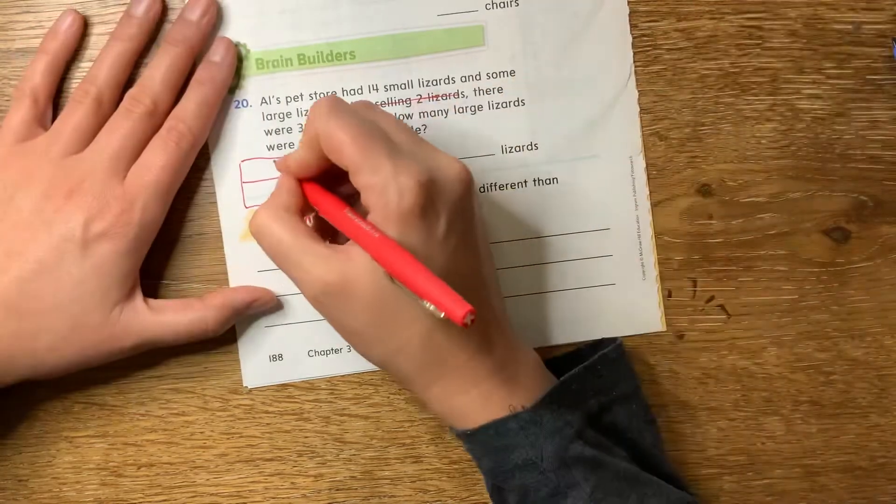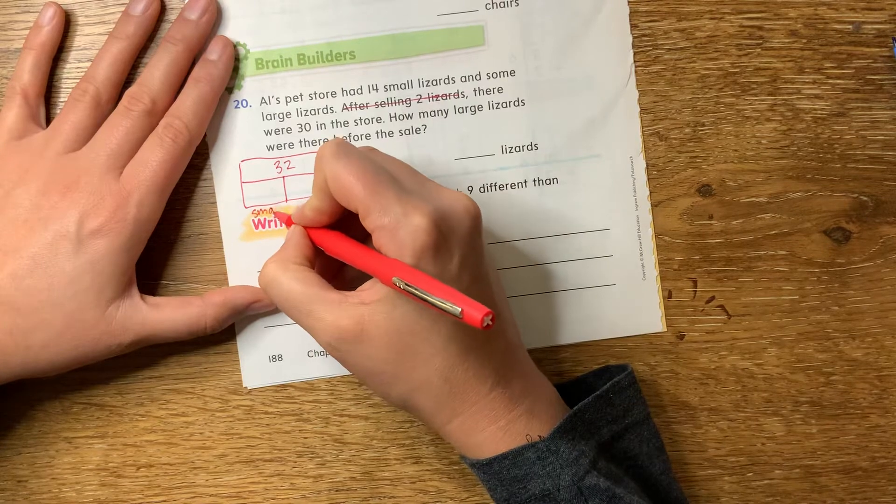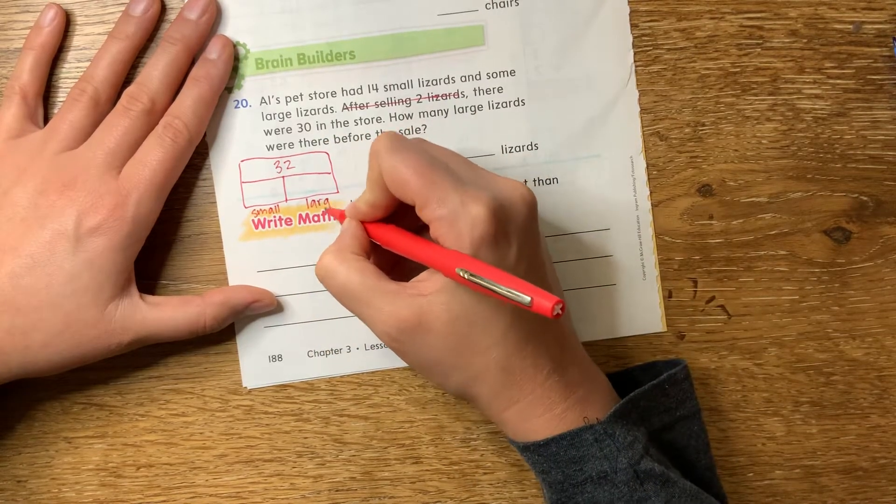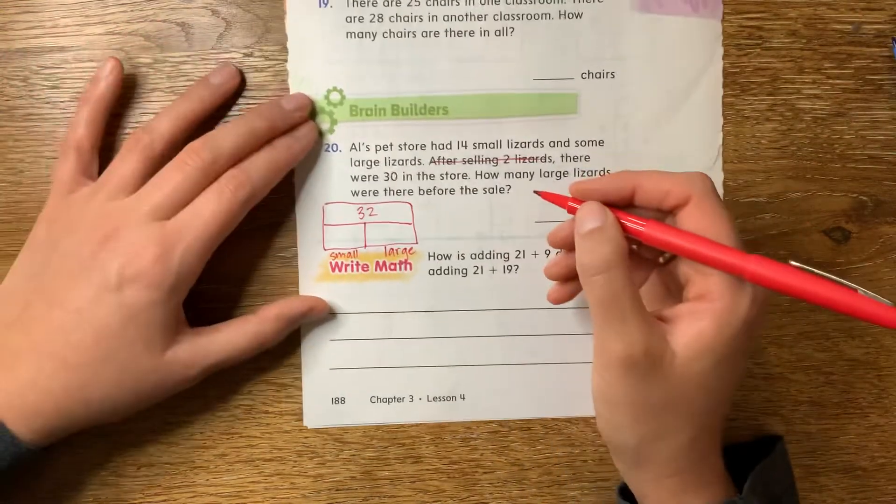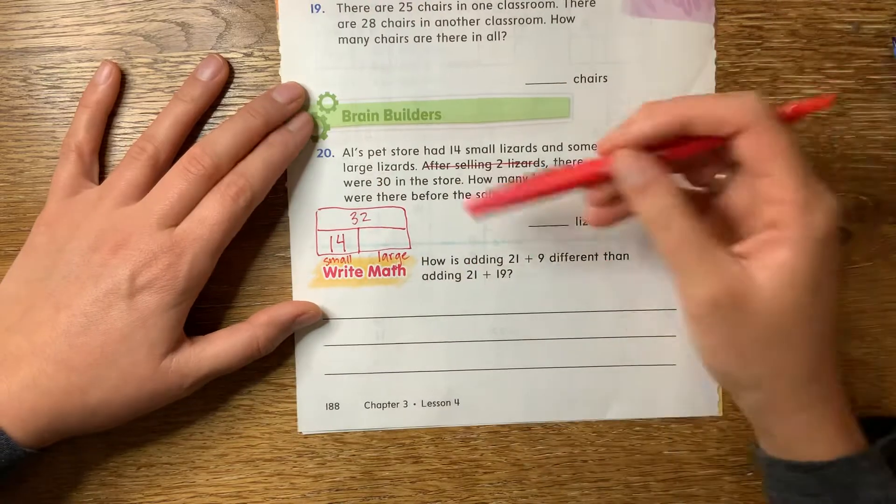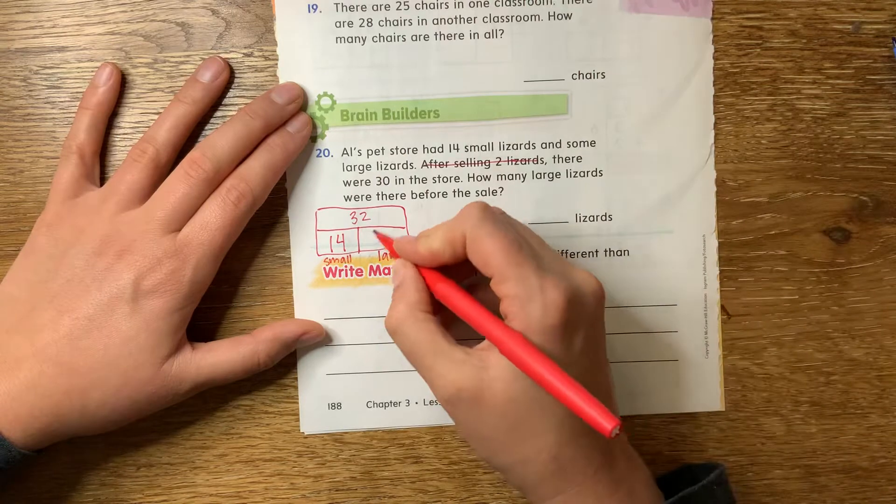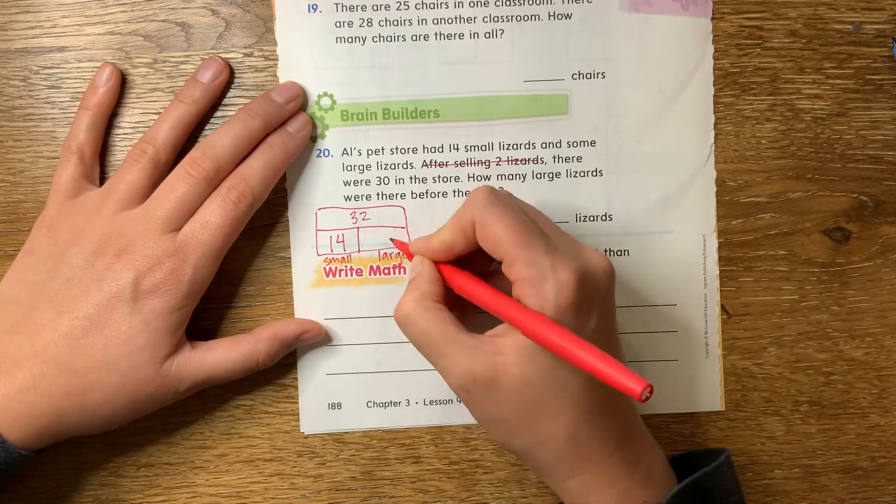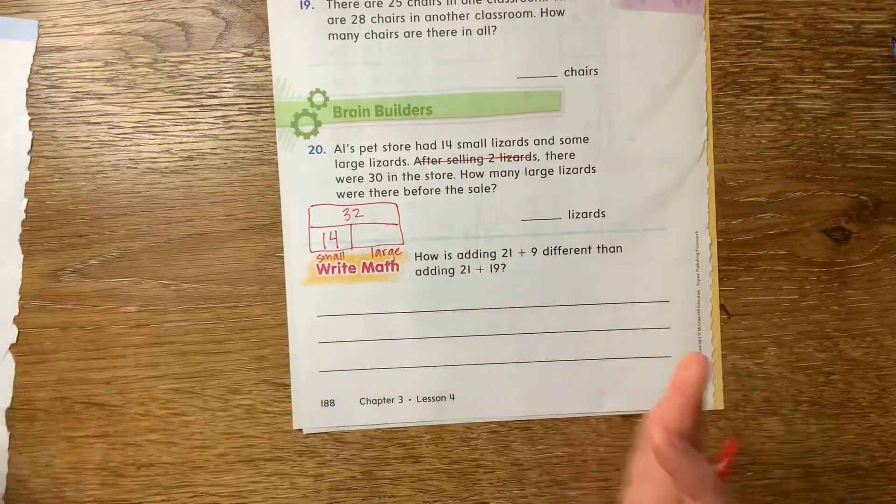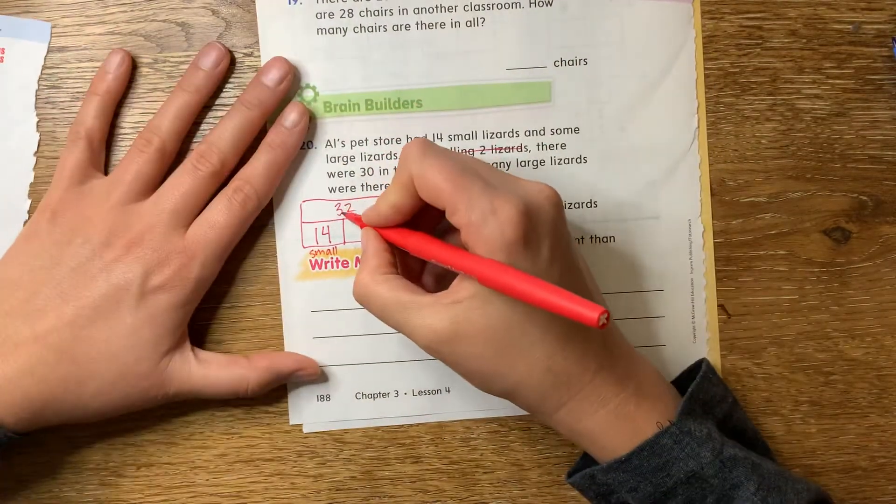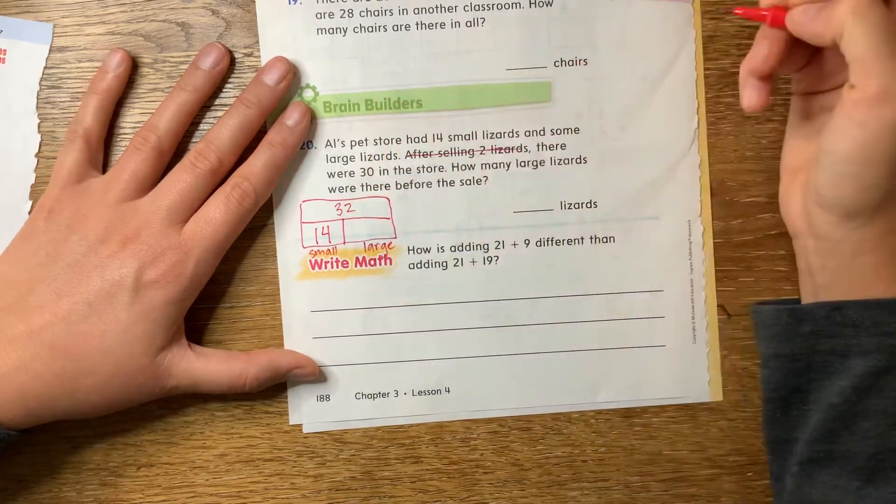So in all, there were 32 lizards. Some of those lizards were small and some of those lizards were large. Okay. We know that how many were small? How many lizards were small? 14, right? Do we know how many were large? No, we don't. It says some large lizards. So you're going to have to figure out what I need to add to 14 to make it 32 in all. Okay. Just like whenever we do our other strategy where we break apart and come back together, this is technically breaking 32 apart into 14 and something else. You have to figure out what's left. Okay. And then you need to answer the right math at the bottom.